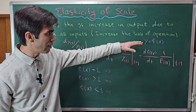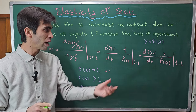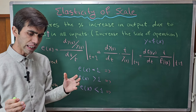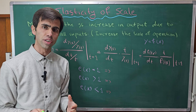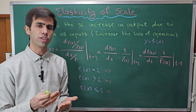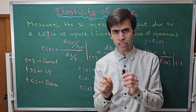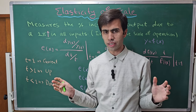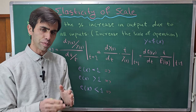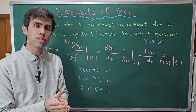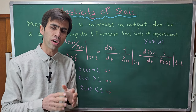It means when we increase the scale of our operation by just one percent, what will happen to the output level? Companies and firms are interested in very small changes — increasing their scale by one percent or two percent. They are not talking about doubling or tripling their inputs. Especially big companies are not going to change their scale by two or three times; rather they are interested in very small changes.